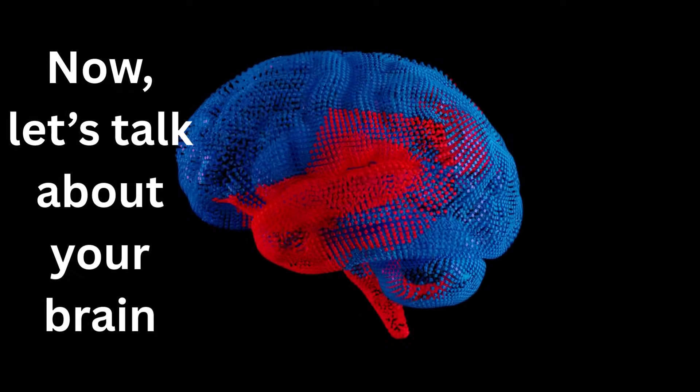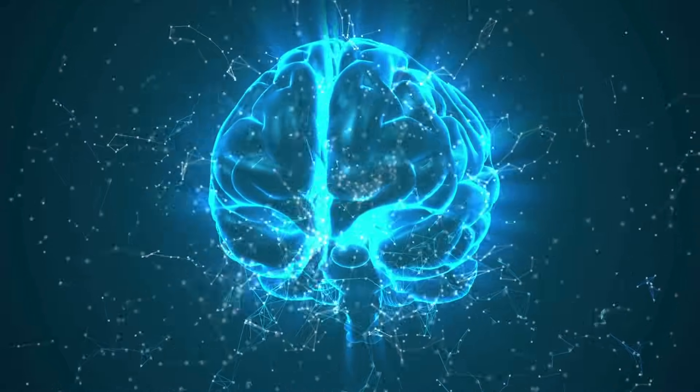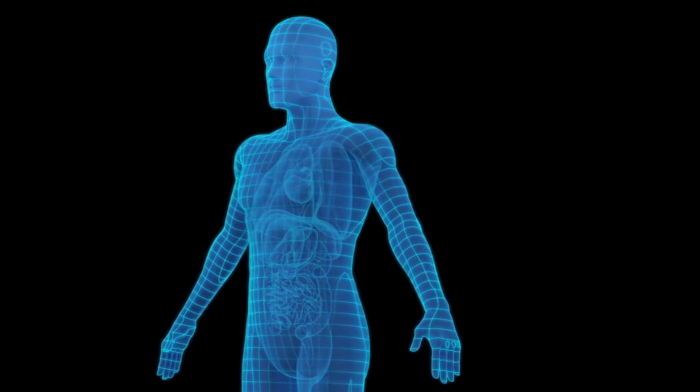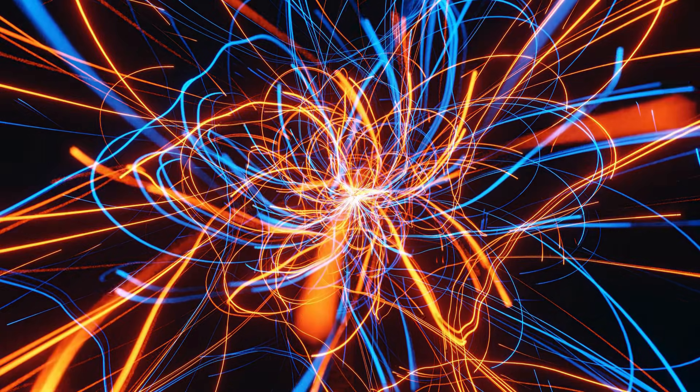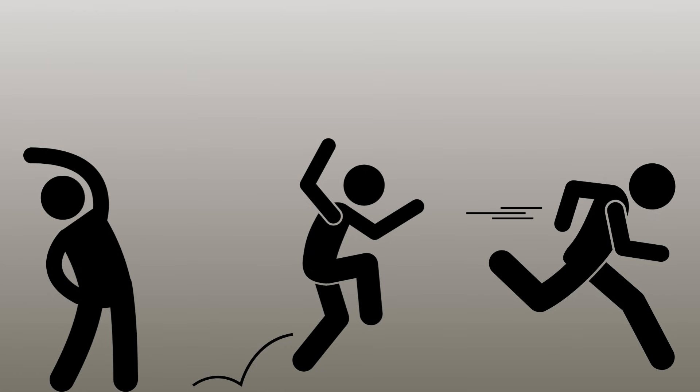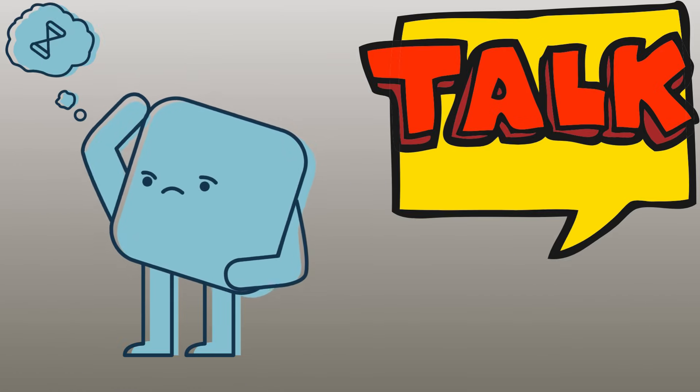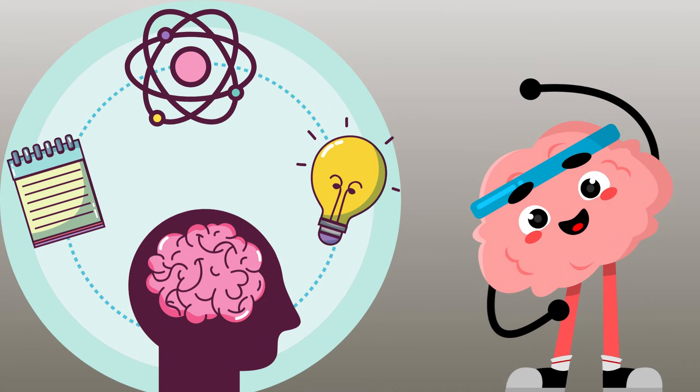Now, let's talk about your brain, the boss of the body. Your brain is the control center of your entire body. It tells your body what to do, like when to move, when to stop, and when to play. It's like a computer that sends messages to your muscles, telling them to stretch, jump, run, and even help you think and talk. Everything you do, from thinking to moving to feeling, comes from your brain.